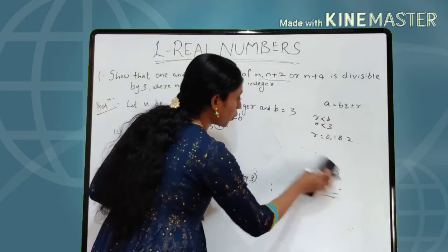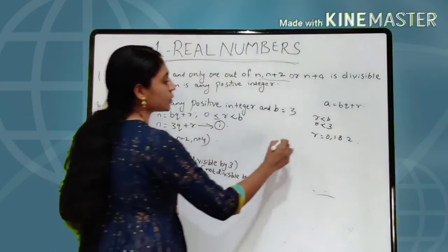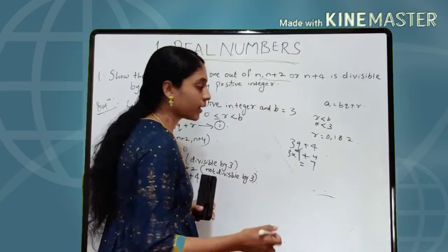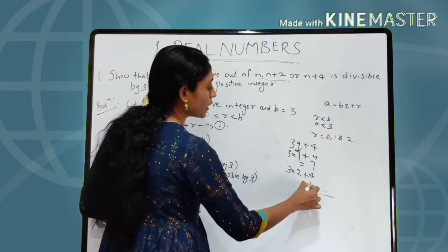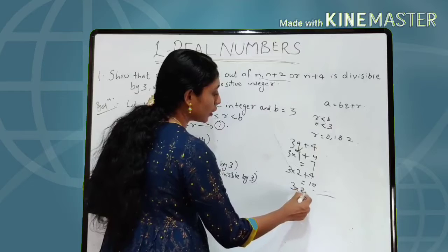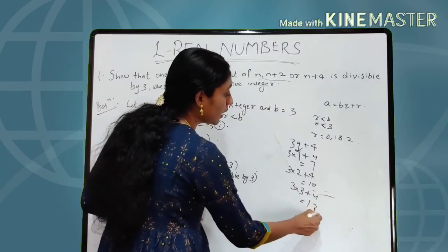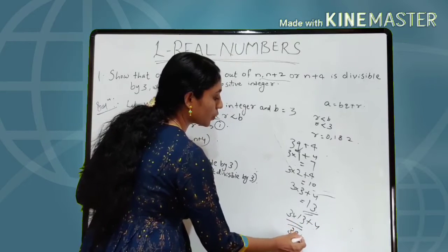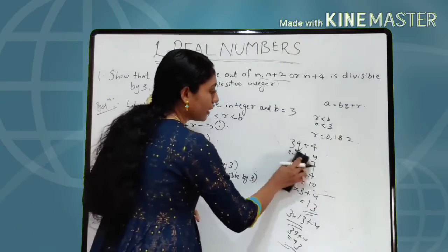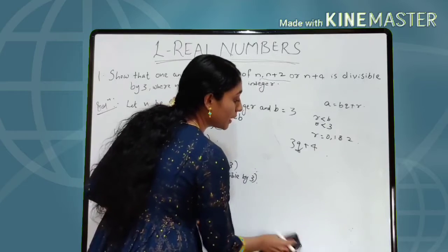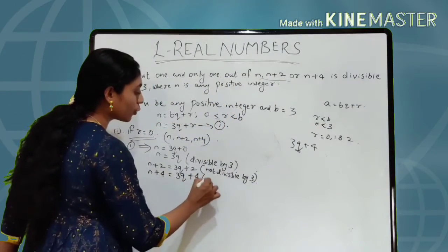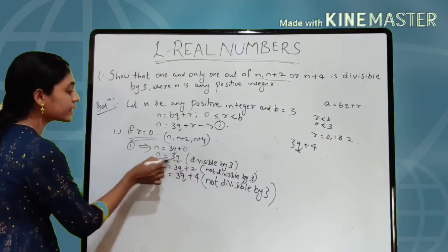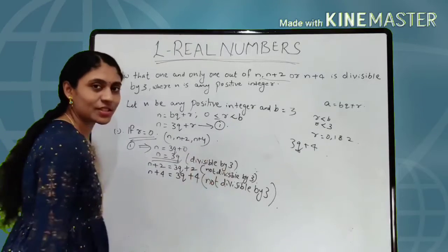What about 3Q + 4? If Q = 1, then 3 + 4 = 7, not divisible by 3. If Q = 2, then 6 + 4 = 10, not divisible. Q = 3: 9 + 4 = 13, not divisible. Q = 13: 39 + 4 = 43, not divisible by 3. So N + 4 = 3Q + 4 is also not divisible by 3. So in the case R = 0, only N = 3Q is divisible by 3; the other two are not.